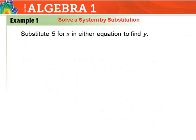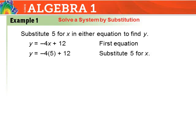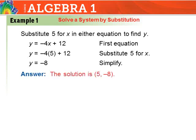Using x equals 5, we substitute into the first equation to find y. We have y equals negative 4x plus 12, so y equals negative 4 times 5 plus 12, which is negative 20 plus 12, giving us y equals negative 8. So the solution is x equals 5, y equals negative 8, written as the ordered pair (5, −8).